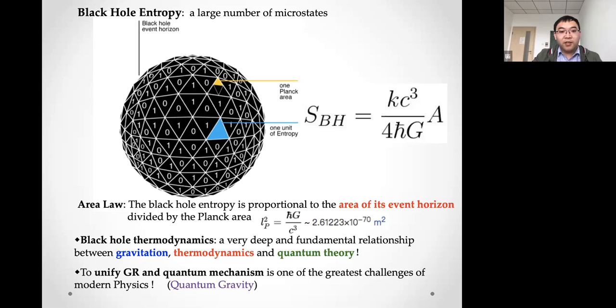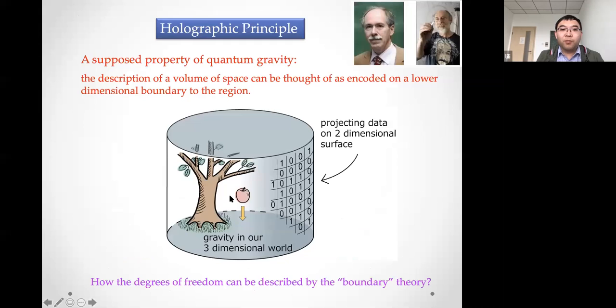To unify general relativity and quantum mechanics is still one of the biggest challenges of modern physics. We want a theory of quantum gravity to understand the nature of gravity, spacetime, and our universe. Motivated by the area law, the holographic principle was proposed for quantum gravity. Roughly speaking, the description of the volume of space can be encoded on a lower-dimensional boundary. All information of the three-dimensional world can be projected onto the boundary surface, though how the degrees of freedom are described by the boundary theory is still an open problem.